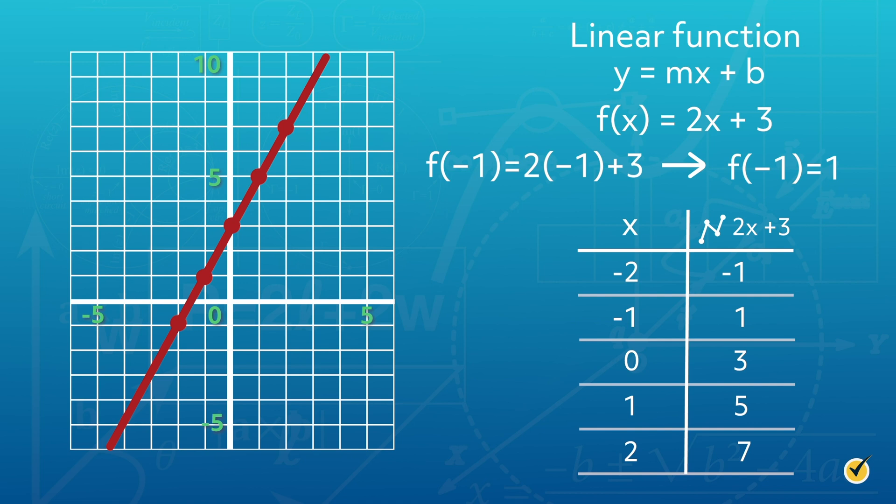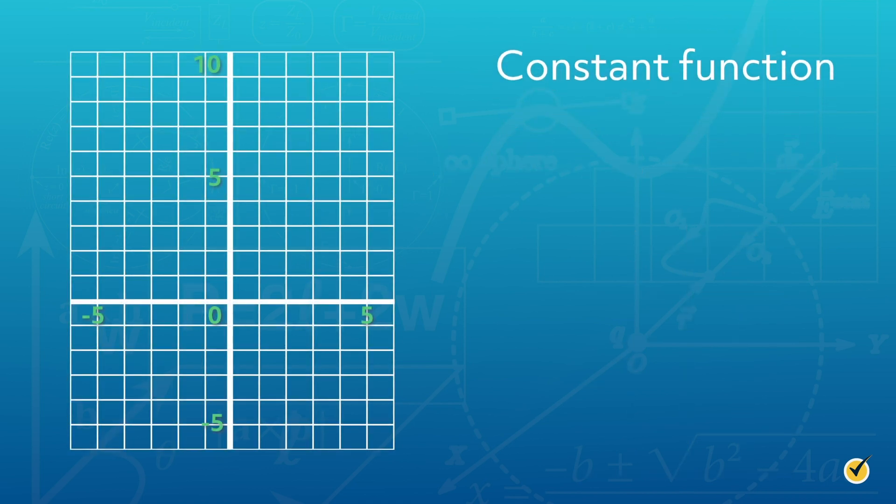If we evaluate this linear function at other values of x around the origin, we see that the graph results in a straight line. The orientation of the line depends on the constants m and b. A constant function is a particular type of linear function that results when m equals 0 and b is any constant.